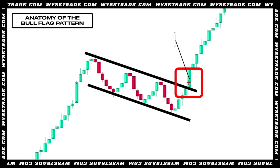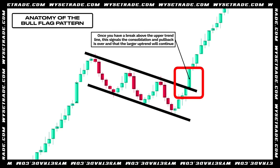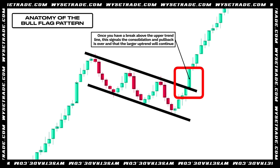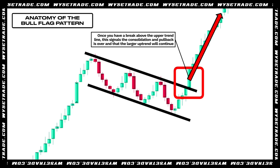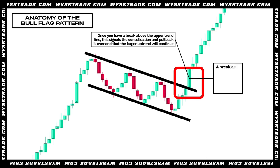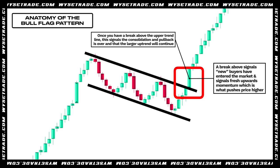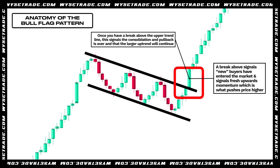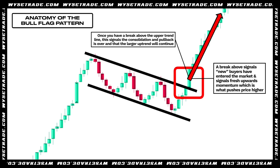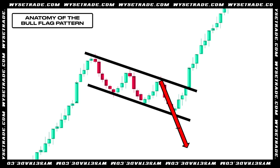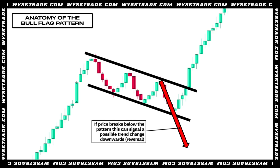Once you have a break above the upper trend line, this signals the consolidation and pullback is over and that the larger uptrend will continue. Or to be more specific, a break above signals new buyers have entered the market and signals fresh upwards momentum, which is what pushes price even higher. If price breaks below the pattern, this can signal a possible trend change downwards.